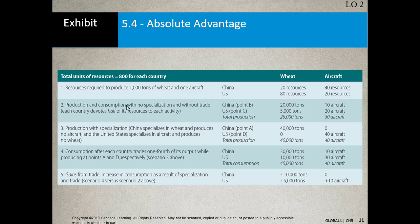What's production and consumption with no specialization and without trade? Each devotes half of their resources to each activity. Total production for wheat is about 25,000 tons and 30 aircraft between the two. But look at the gains from trade: with specialization, China gains 10,000 extra tons of wheat, and the U.S. gains 5,000 tons of wheat and 10 aircraft. That's the gain from trade.